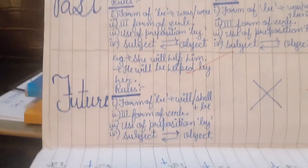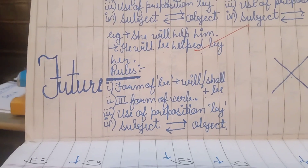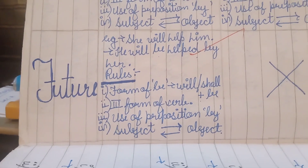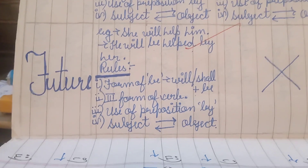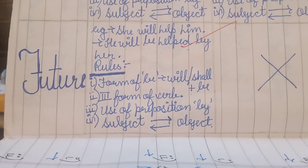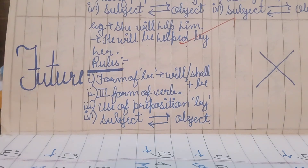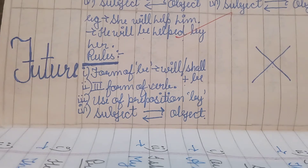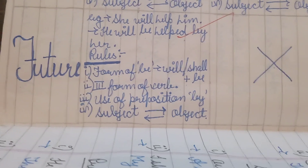Moving on to Future Simple tense, the example is: 'She will help him.' The passive is: 'He will be helped by her.' The form of 'be' used in Simple Future is 'will/shall' plus 'be.' We also use the third form of verb, the preposition 'by,' and 'she,' which was the subject, becomes the object 'her.'